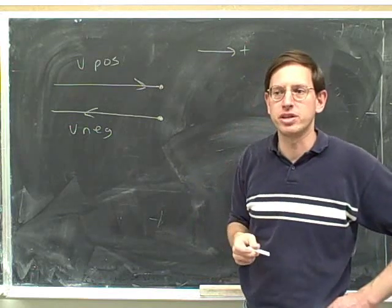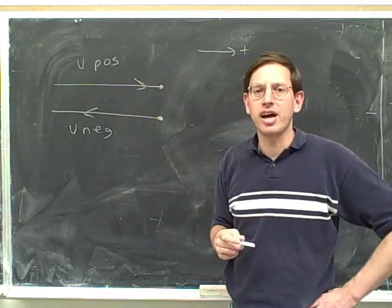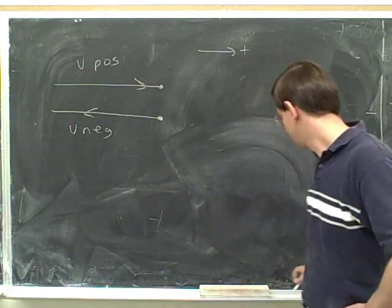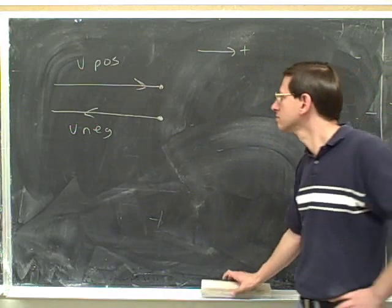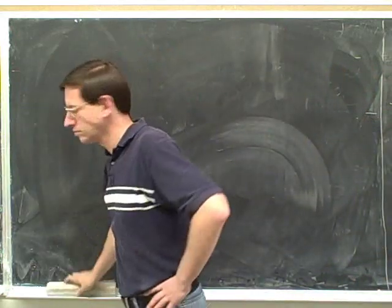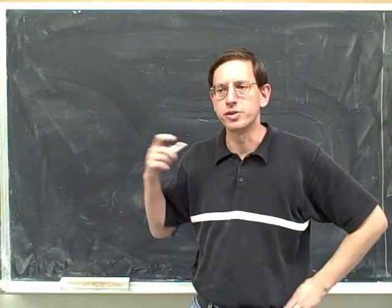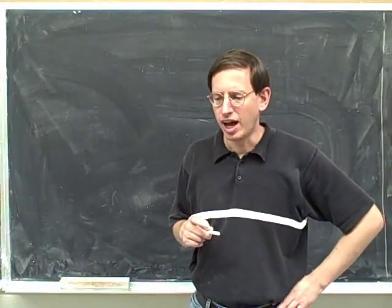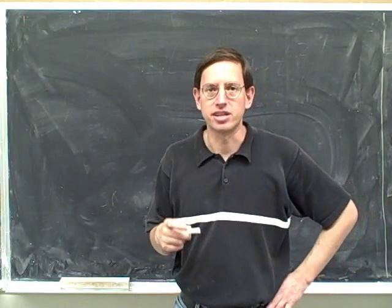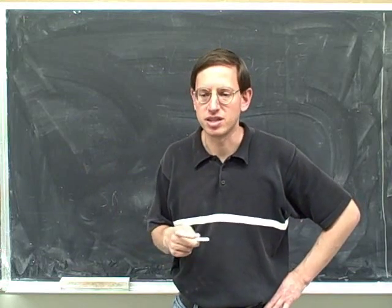This is an important point to put in your notes: anytime an object is changing direction, its velocity at the moment that it changes direction is zero. In the instant that you reverse your direction, your velocity must be zero.